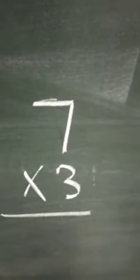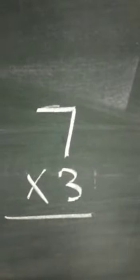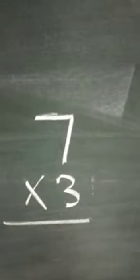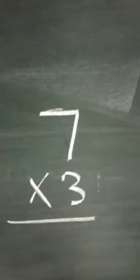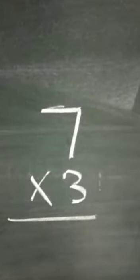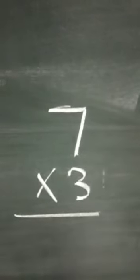For example, if we have to multiply 7 and 3, we must know the table of 7 and 3. And we can use any one of them. 3 times 7 is 21. So learn the tables and keep practicing the sums.